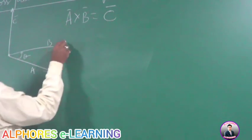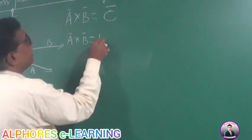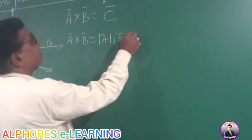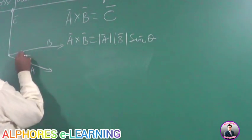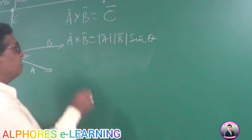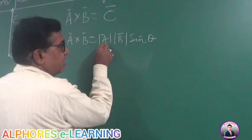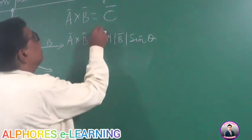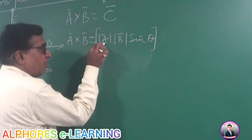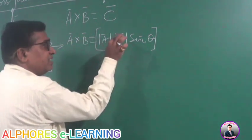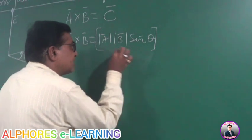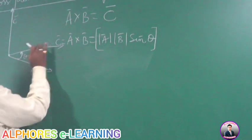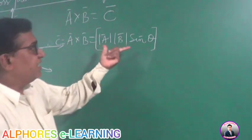So A cross B is the product of the magnitudes of the vectors A and B, and sine of the angle between the vectors. When I multiply mod A, mod B, and sin theta, I get a scalar value. But A cross B must result in a vector C bar, which has direction. The magnitude is mod A times mod B times sin theta, and then there is the direction component.